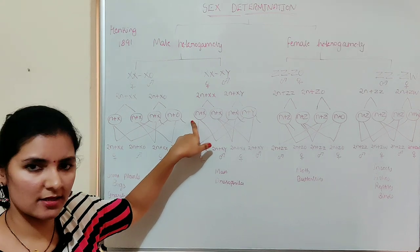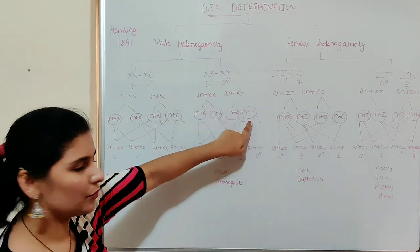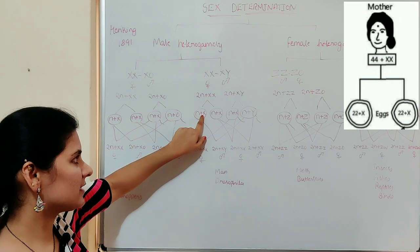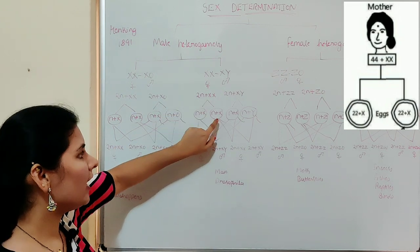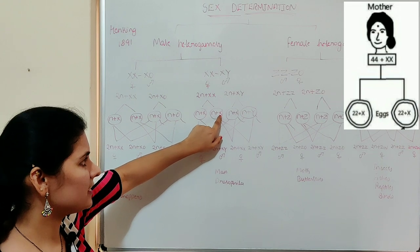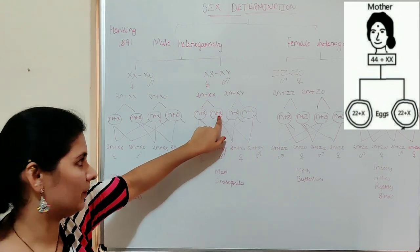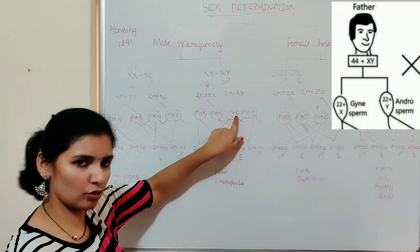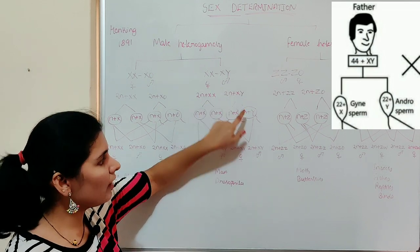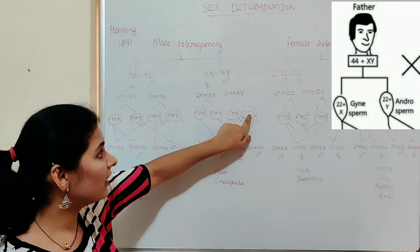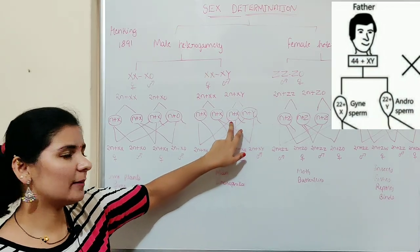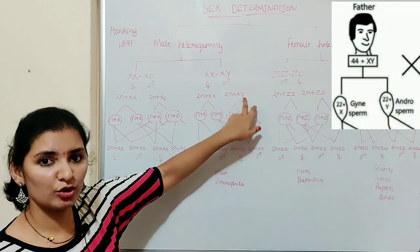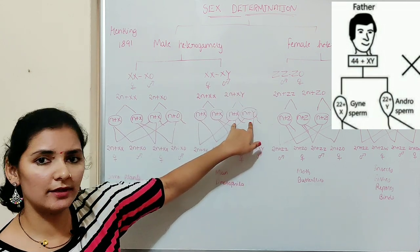During gametogenesis, females produce eggs and males produce sperm. The eggs produced by females all carry X chromosomes. The sperm produced by males are of two types: 50% carry the X chromosome (N + X) and 50% carry the Y chromosome (N + Y). Since the male produces two different types of gametes, this is a type of male heterogamety.